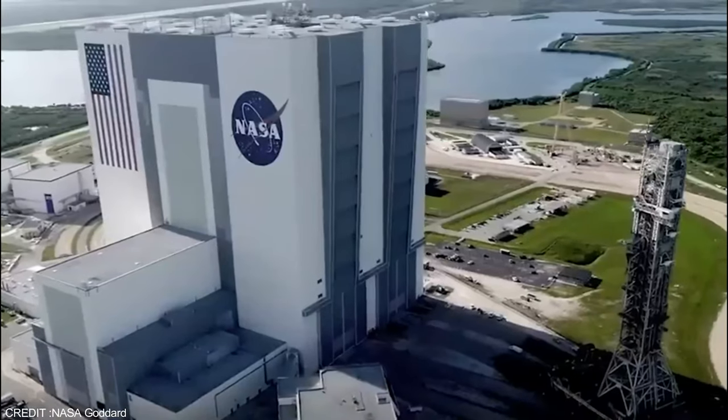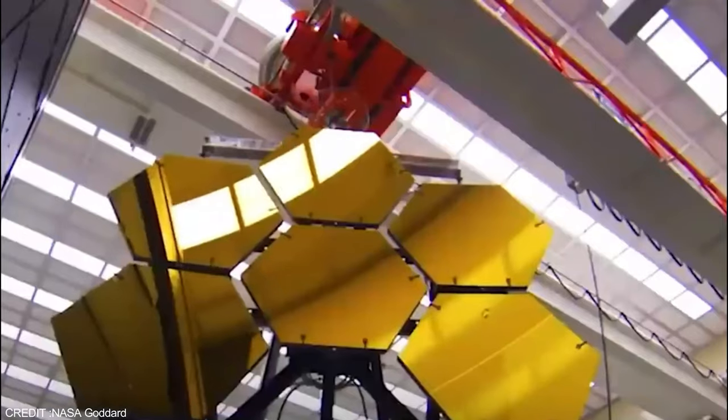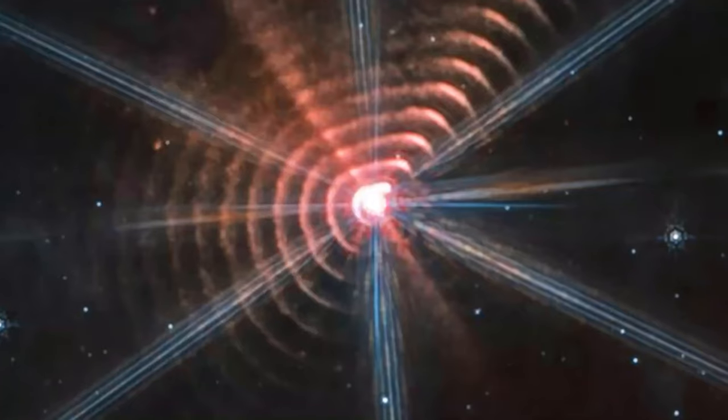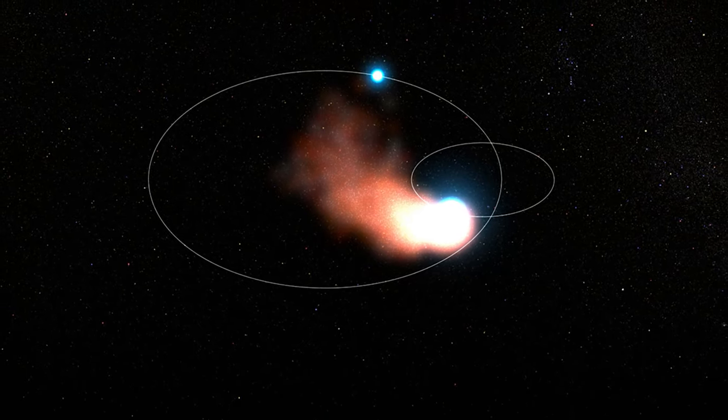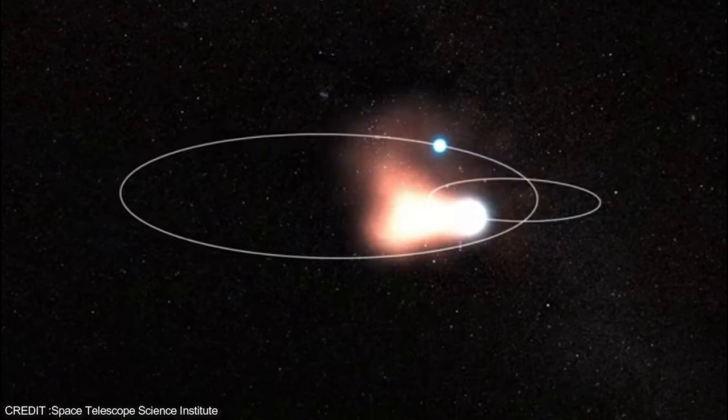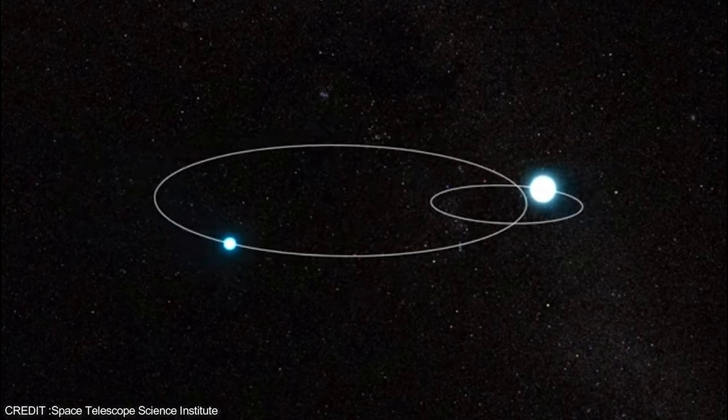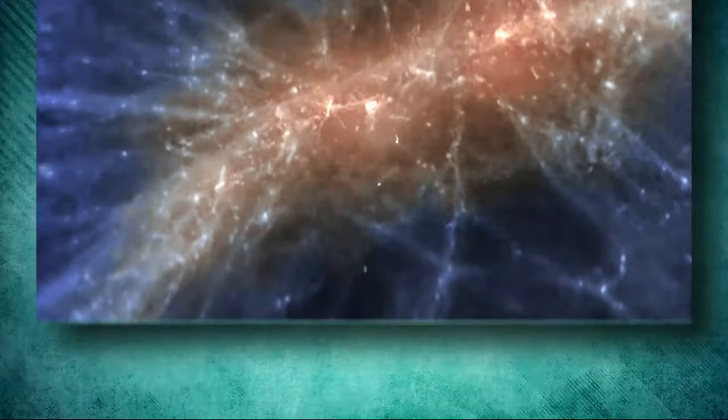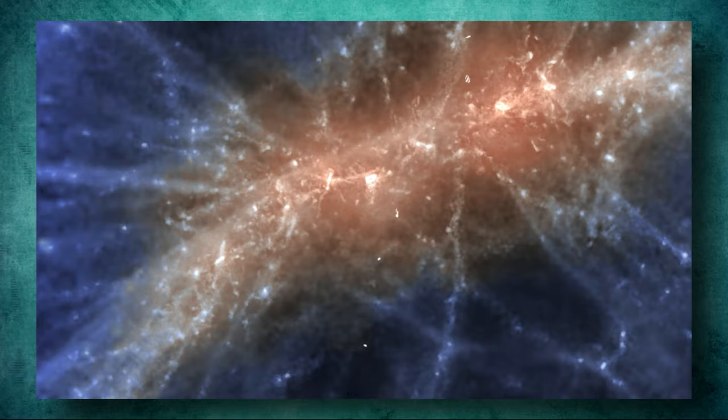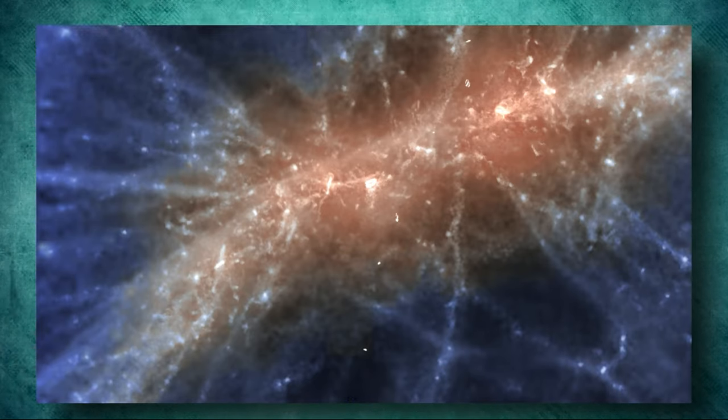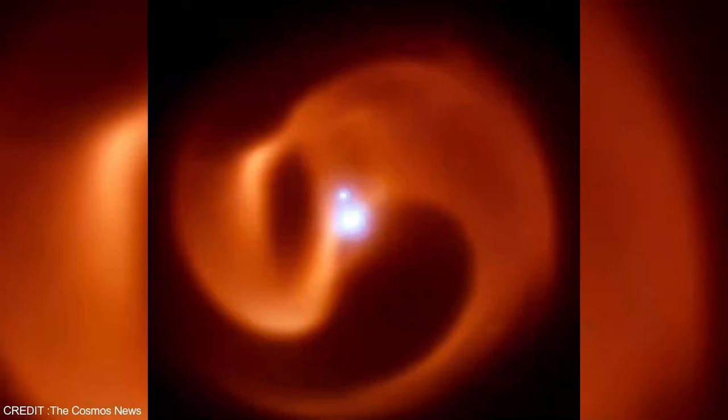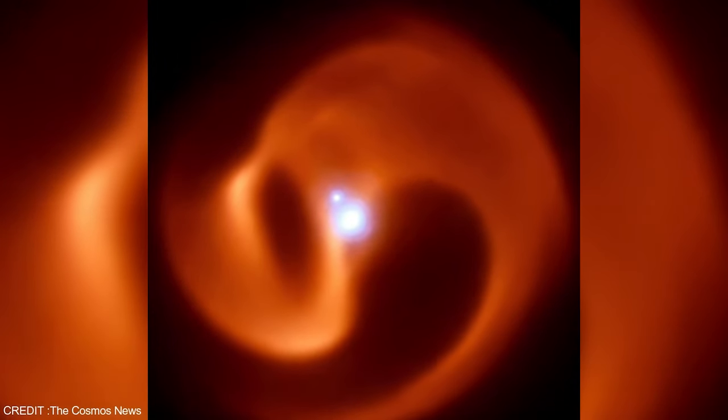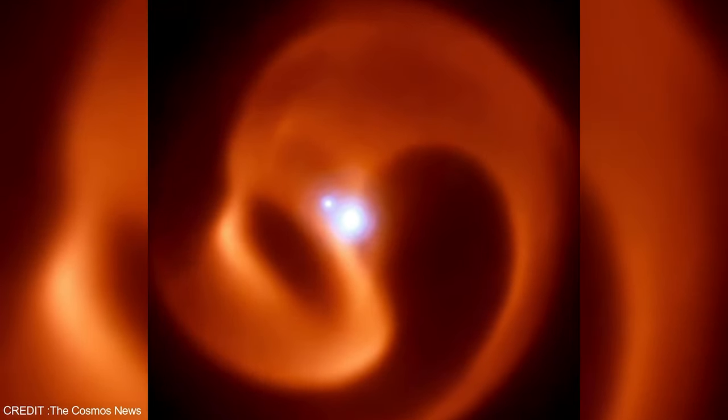This incredible telescope has captured a fantastic image of the binary star system WR140, revealing rings of cosmic dust being ejected into space by the two stars. These rings are formed when the stars pass close together in their orbits, interacting with each other's winds and creating the beautiful shells of dust we can see in the image. The team studying the image has uncovered some fascinating information. They have found at least 17 rings surrounding the binary system, and the evenly spaced rings indicate that this process occurs every eight years like clockwork.